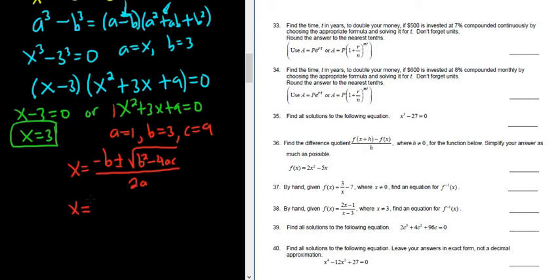So this is going to be negative 3 plus or minus b squared. So it's going to be 9 minus 4ac. Yeah, ac, 1, 9. Looks okay. All over 2a, 2 times 1.